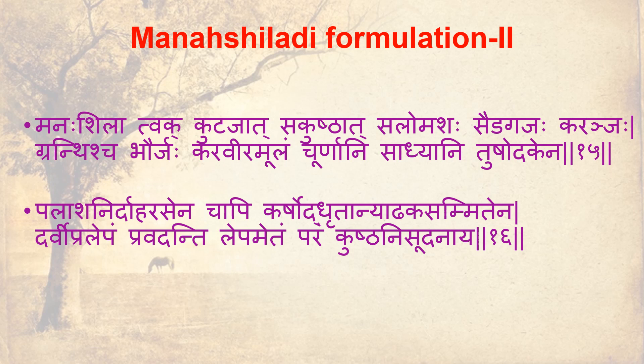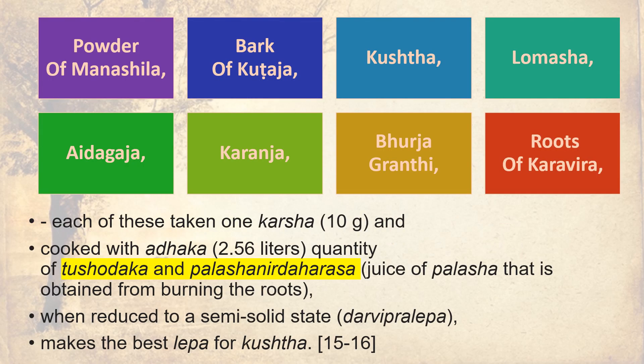Manashiladhi Formulation 2: Powder of Manashila, bark of Kudaja, Kushta, Lavamashah, Aedagajah, Karanjah, Burujjah, Grinti — roots of Karavira — each in one Karsha (10 grams), cooked with Aadaga to burn 5-6 liters of Tushodak and Palashah Nirdaha Rasah. Use of Palashah obtained from burning of root, when reduced to a semi-salt state (Dharvi Pralibam), makes the best lepa for Kushta.